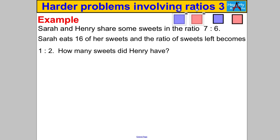If you feel like you can, pause the video and have a go at this one. Sarah and Henry share some sweets in the ratio 7 to 6. Sarah eats 16 of her sweets and the ratio left becomes 1 to 2. How many sweets did Henry have? Let's draw a picture of the original situation.